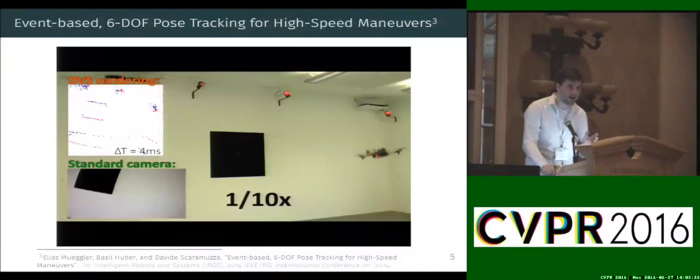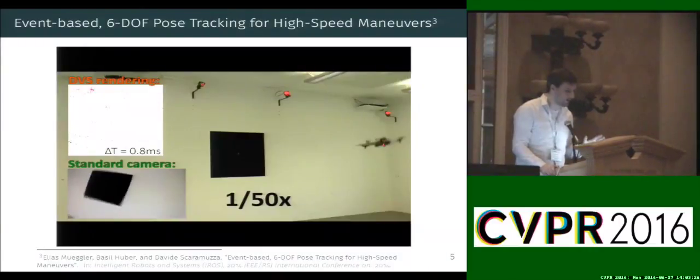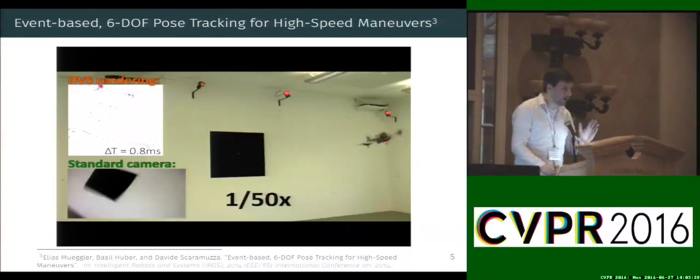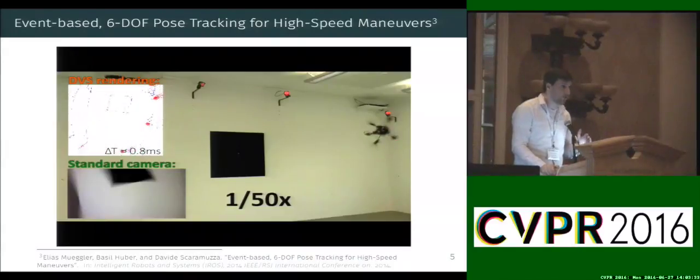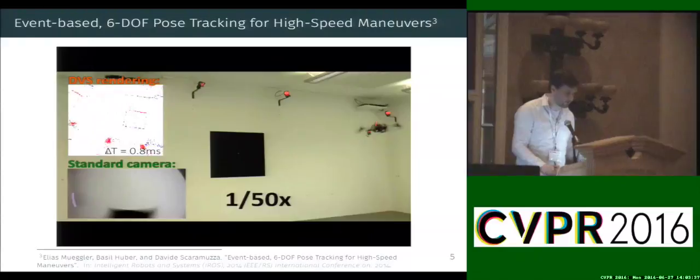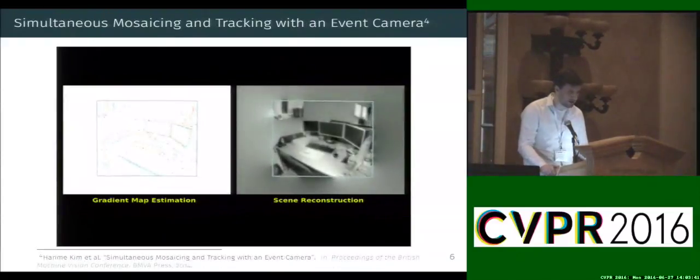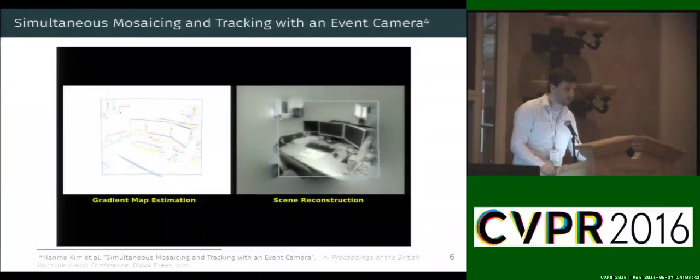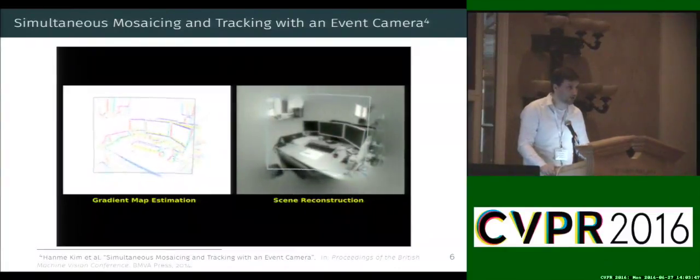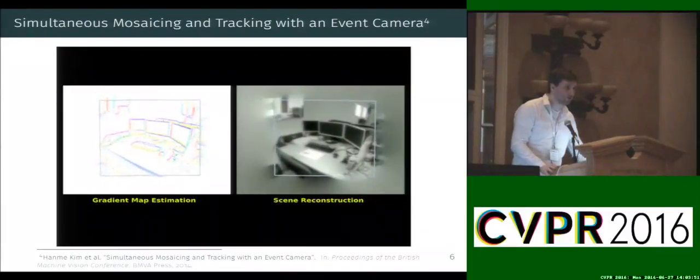However, this work is quite limited since it needs a known target in the environment because tracking any kind of object in an event stream is not that trivial. So to overcome that limitation, other works have been focusing on analyzing the event stream directly. For example, Hanme Kim could reconstruct with the event stream a panoramic image, but this as well is quite limited because it only allows to reconstruct a static scene where nothing is moved and the camera could only rotate.